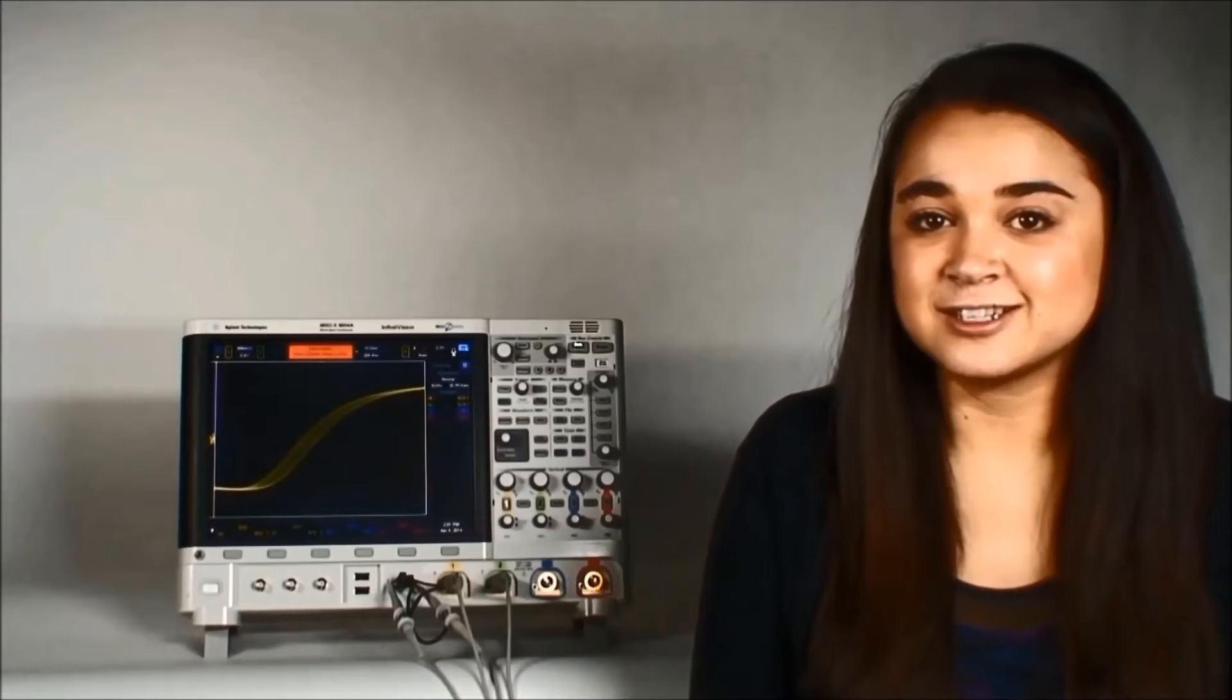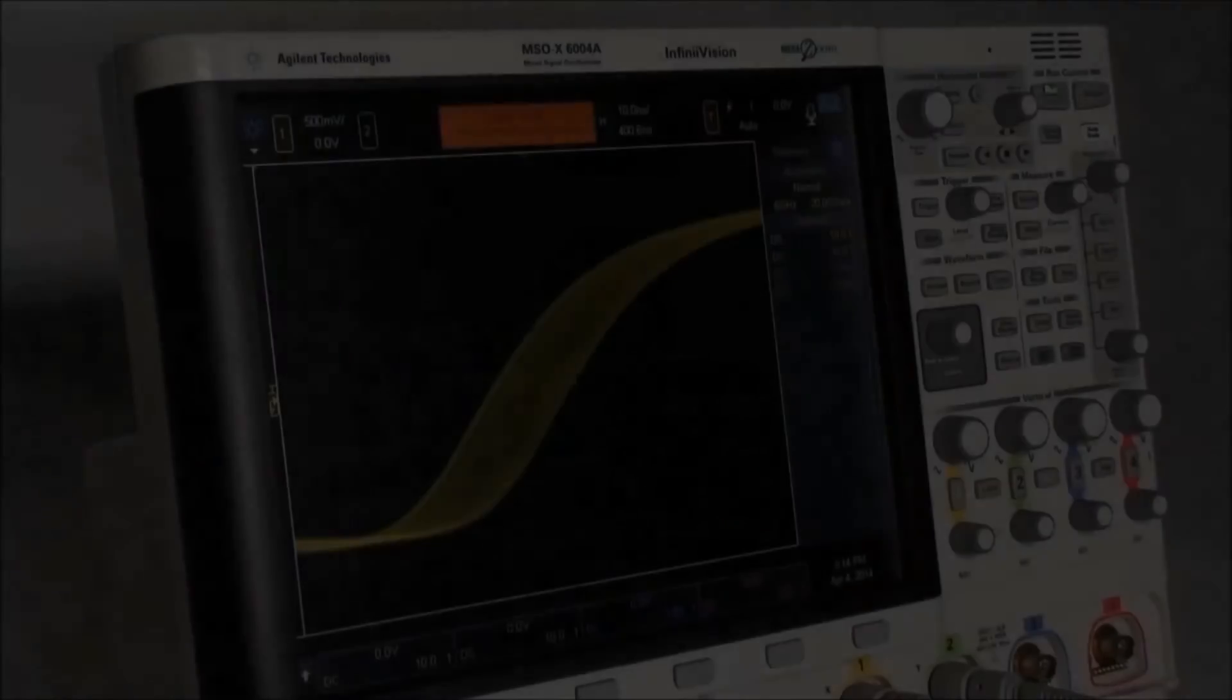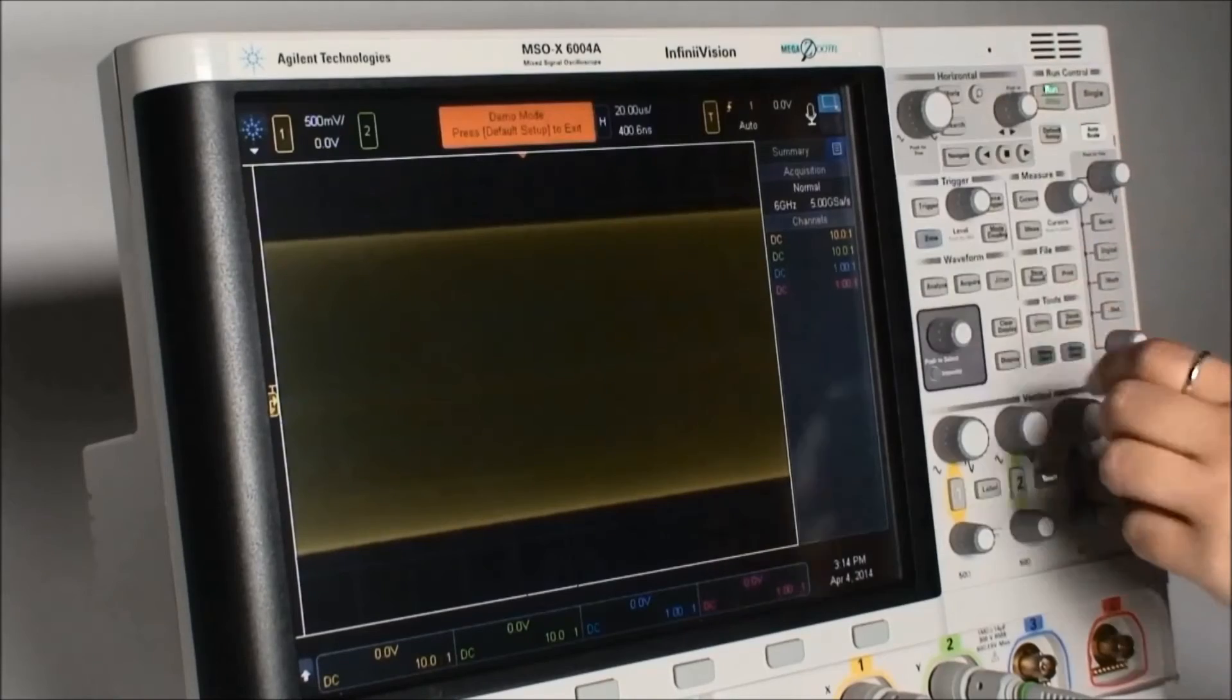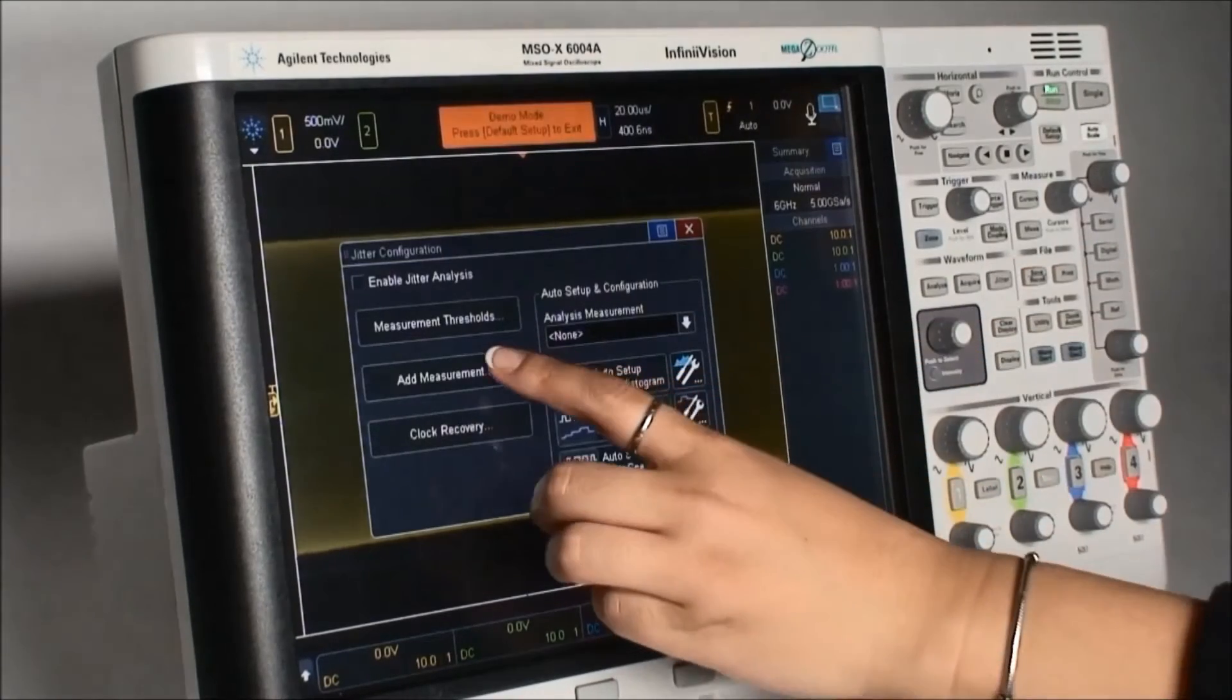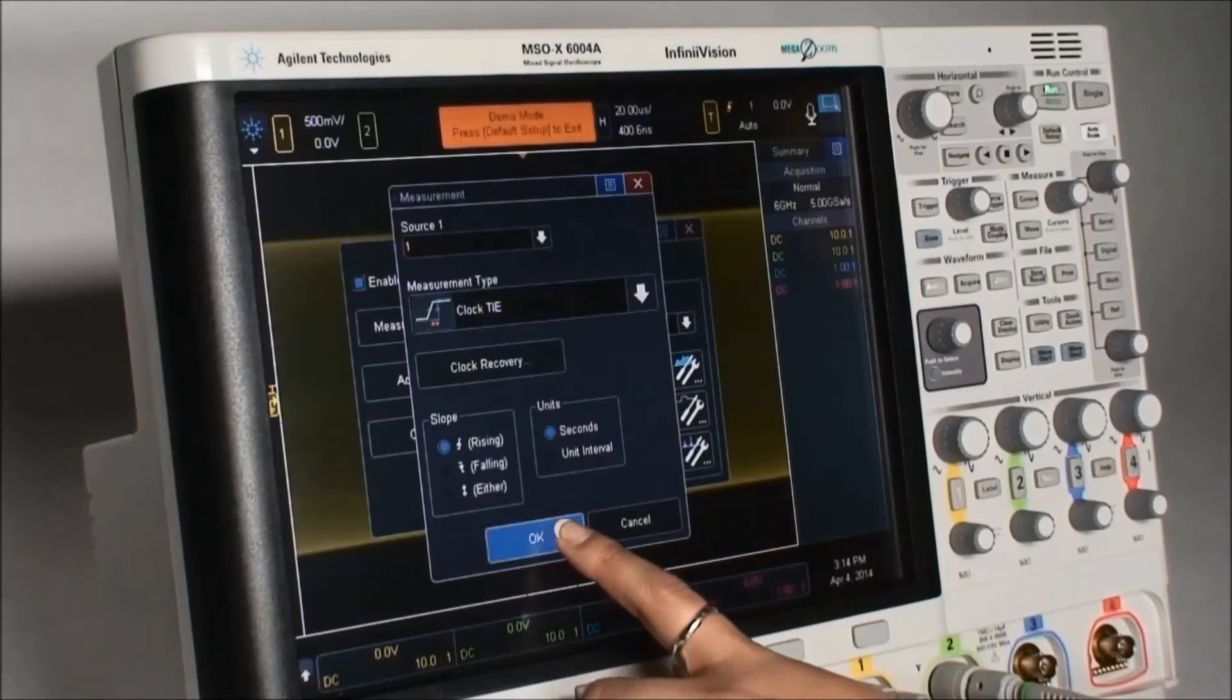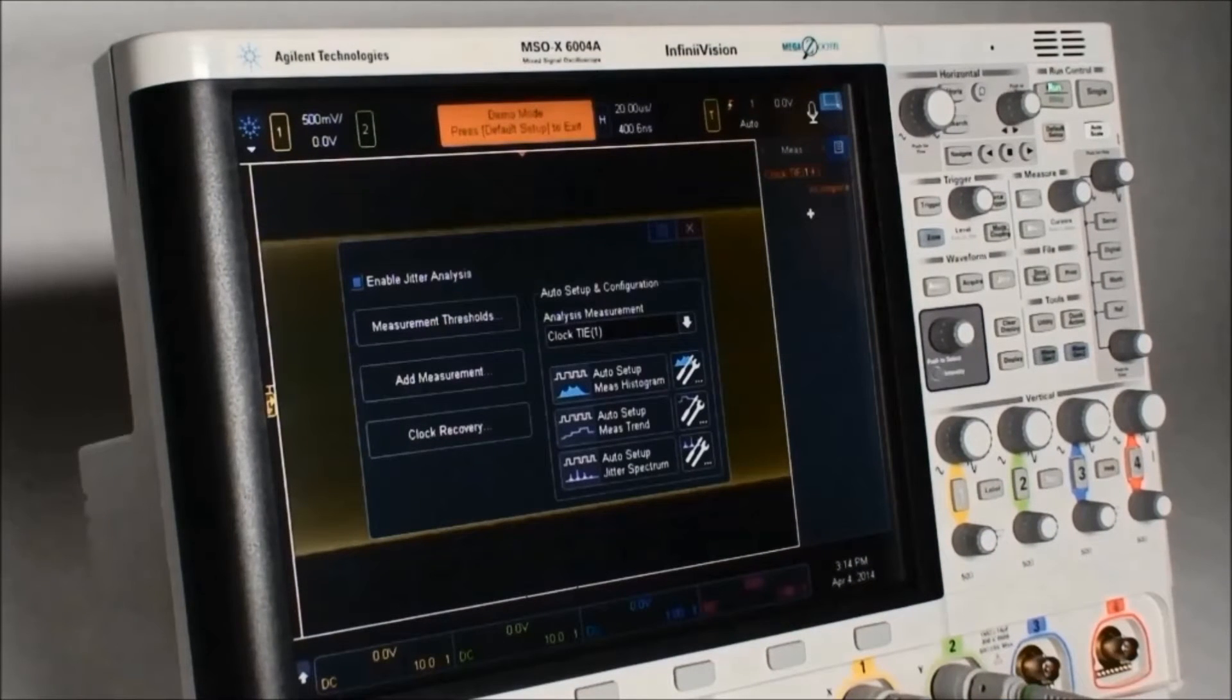Let's use the 6000x series jitter analysis to try and find the cause of this jitter. We will first need to enable the jitter analysis and add a time interval error measurement that will be based on a constant clock recovery. This will simulate a receiver with no filter. The auto setup keys make it easy to enable various jitter measurements, and each plot will be based on timing errors of each edge of the signal relative to the recovered clock.